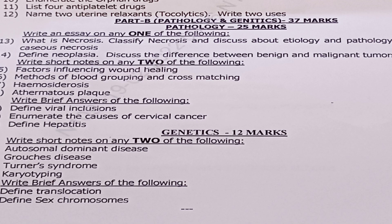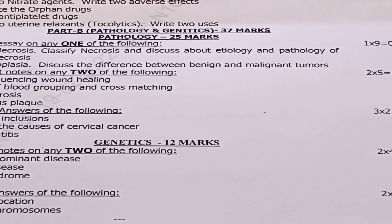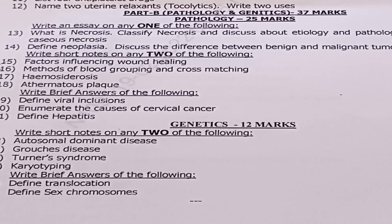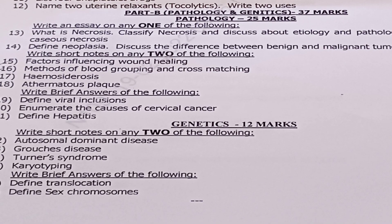Next, Genetics for 12 marks. Short notes — answer any two of four, 2 into 4 equals 8 marks: Question 22: autosomal dominant disorders. Question 23: Gaucher's disease. Question 24: Turner syndrome. Question 25: karyotyping. Brief answers — answer both, 2 into 2 equals 4 marks: Question 26: define translocation. Question 27: define sex chromosome.